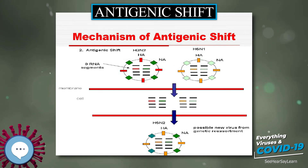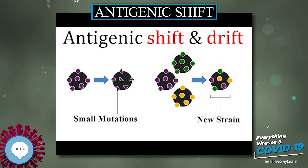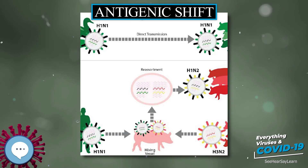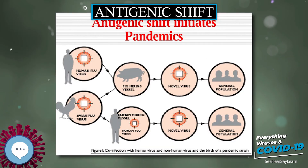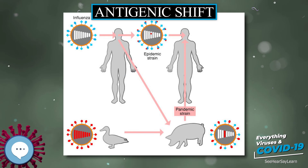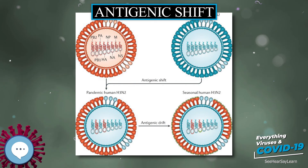Influenza viruses which have undergone antigenic shift have caused the Asian flu pandemic of 1957, the Hong Kong flu pandemic of 1968, and the swine flu scare of 1976. Until recently, such combinations were believed to have caused the infamous Spanish flu outbreak of 1918, which killed an estimated 40 to 100 million people worldwide. However, more recent research suggests the 1918 pandemic was caused by the antigenic drift of a fully avian virus to a form that could infect humans efficiently.